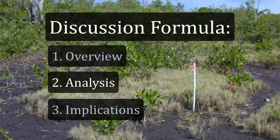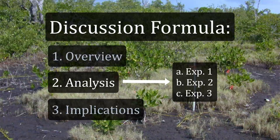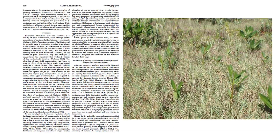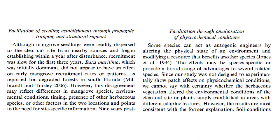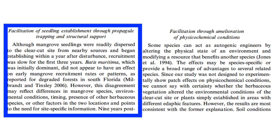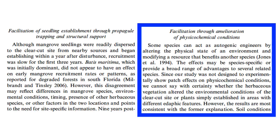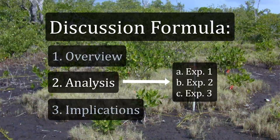The second section of the discussion should provide an in-depth interpretation of the findings. Depending on the complexity of your study, this part may be divided into subsections, each focused on a different experiment or process studied. If you conducted three experiments, you could create a subsection to discuss each one in turn, or divide the discussion according to three processes studied. In my example, I divided this part into an examination of the three mechanisms mentioned in the opening section. I combined the first two mechanisms and titled the first subsection 'Facilitation of Seedling Establishment through Propagule Trapping and Structural Support.' The next subsection focused on the third mechanism, 'Amelioration of Physicochemical Conditions,' discussed in detail and in relation to what others have found. The number and arrangement of subsections will obviously vary from paper to paper.